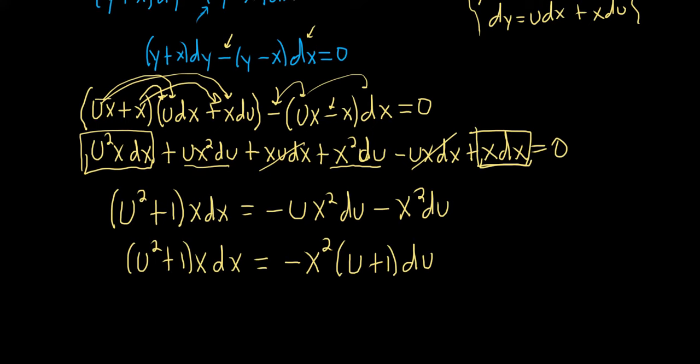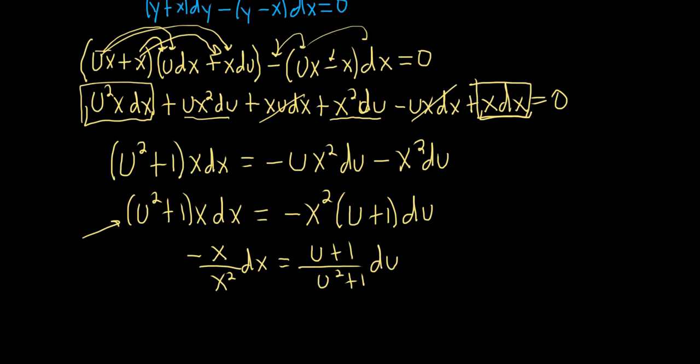So we want all the x's on one side and all the u's on the other side. So I guess we can divide both sides by negative x². So we'll have negative x over x²dx. And at the same time, we'll divide by u²+1. That'll give us (u+1) over (u²+1)du. So we divide it by negative x² and we divide it by u²+1.